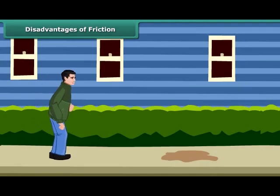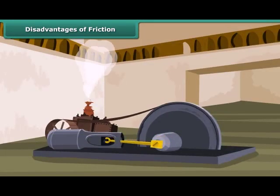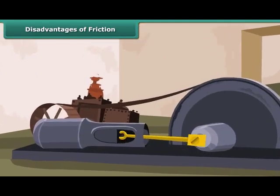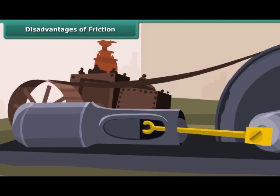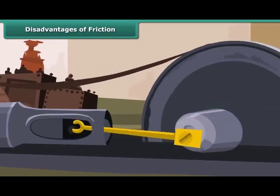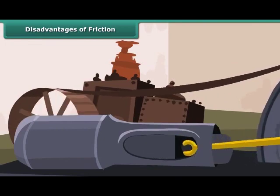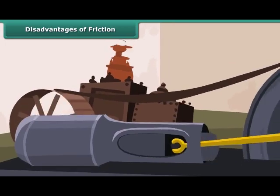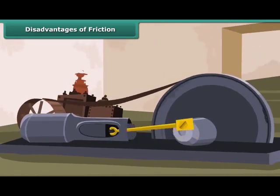When we step on a greasy or oily surface, a foot slips because friction is reduced due to the smoothness of the grease or oil. Friction also reduces the efficiency of machines — some of the forces applied to run a machine are lost in overcoming friction between its moving parts. When the moving parts of a machine rub together, a lot of heat is produced, which damages the machine.